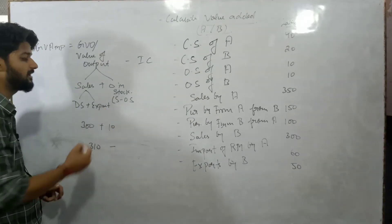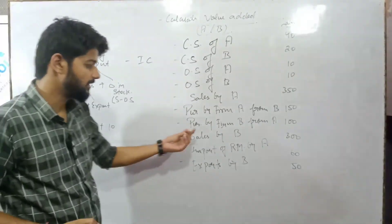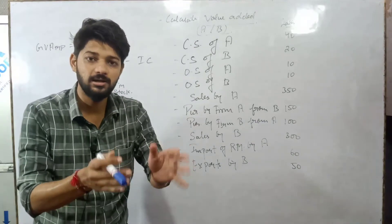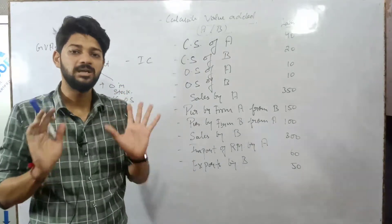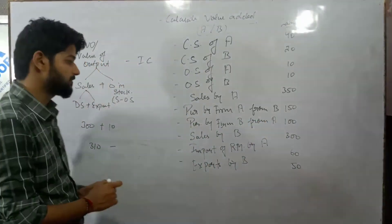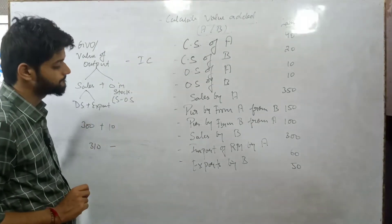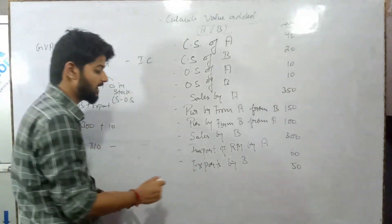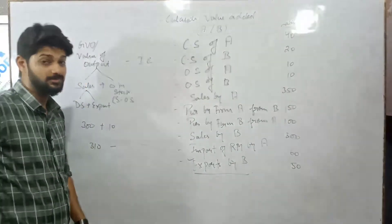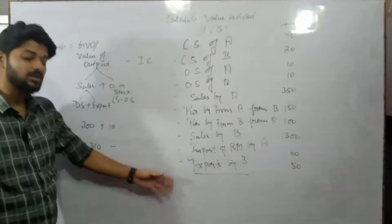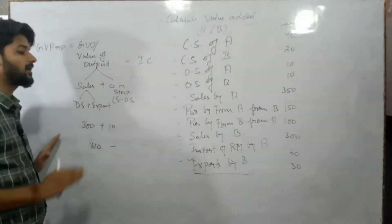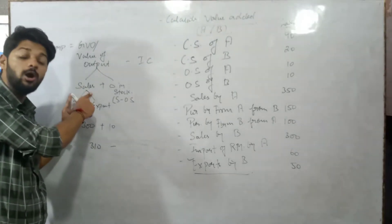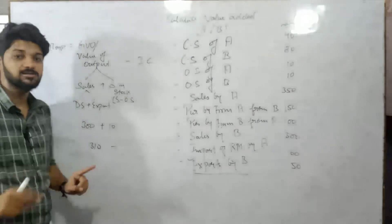For Firm B: 310 minus Intermediate Consumption. Intermediate Consumption is the purchase by Firm B from Firm A — that is an intermediate consumption for Firm B, with a value of 100. There is also a special item: Export by Firm B. Export is part of the Value of Output, because as I mentioned at the start, if only 'Sales' is given (not 'Total Sales'), it is considered domestic sales, and you add Export separately to get Total Sales.